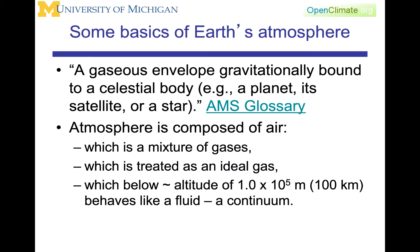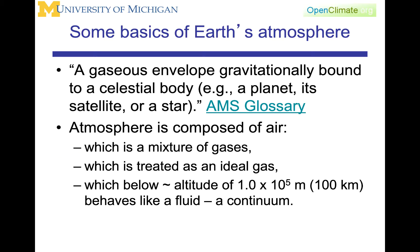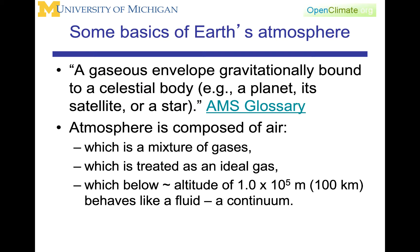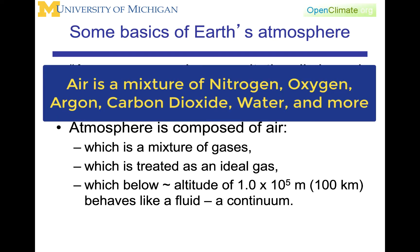So what is the atmosphere? The atmosphere is a gaseous envelope gravitationally bound to a celestial body — for example, a planet, its satellite, or a star. That's from the AMS, the American Meteorological Society Glossary, which is a reference I would recommend you use regularly. The atmosphere is composed of air, which is a mixture of gases, primarily nitrogen and oxygen, and it has water and carbon dioxide, as well as argon, and then a lot of other trace gases, some of which are made by humans.